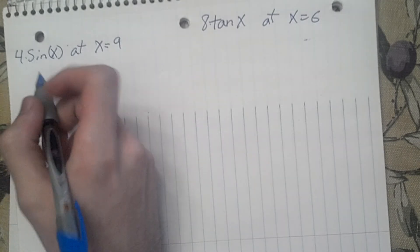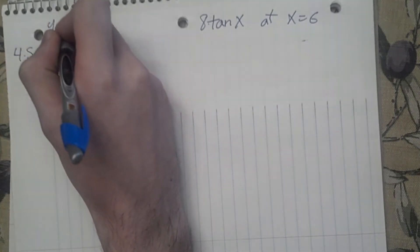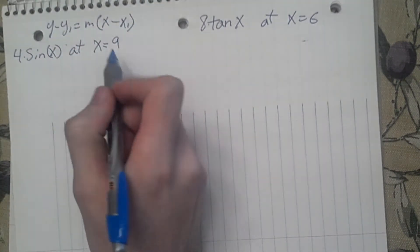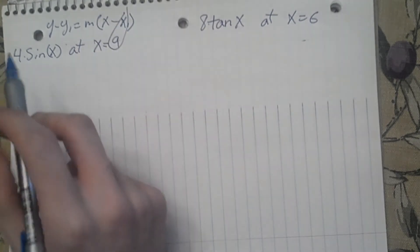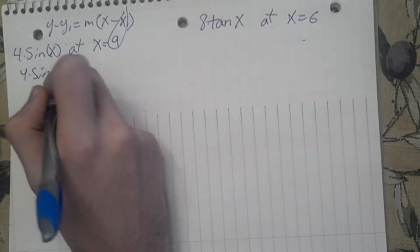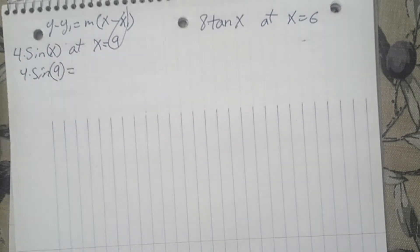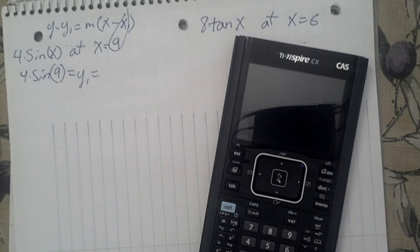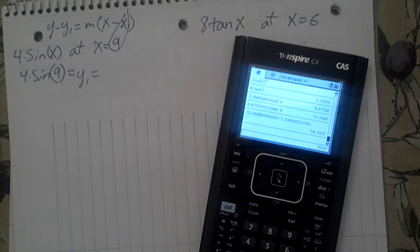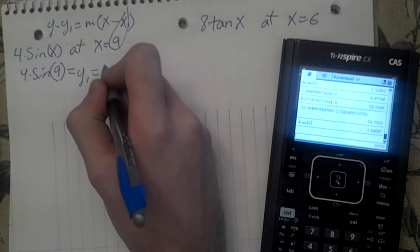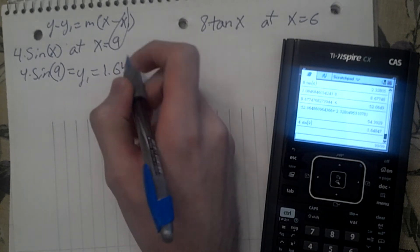For sine x, we have to use y minus y1 equals m times x minus x1. Our x1 equals 9. Our y1 will be 4 times sine of 9 equals y1, and we plug that in our calculator.